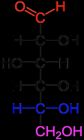Monosaccharides are classified according to three different characteristics: the placement of its carbonyl group, the number of carbon atoms it contains, and its chiral handedness. If the carbonyl group is an aldehyde, the monosaccharide is an aldose; if the carbonyl group is a ketone, the monosaccharide is a ketose. Monosaccharides with three carbon atoms are called trioses, those with four are called tetroses, five are called pentoses, six are hexoses, and so on.